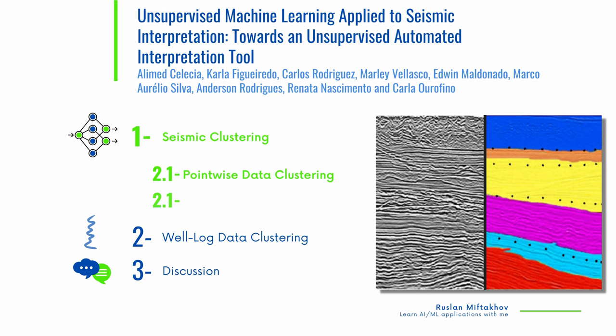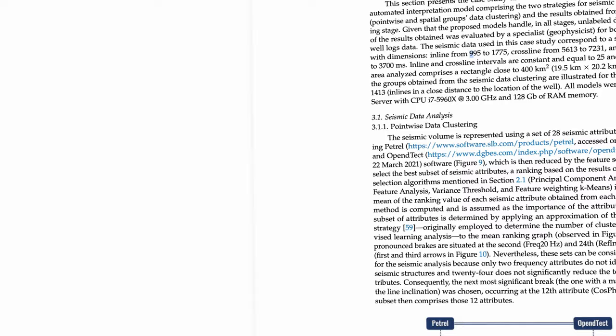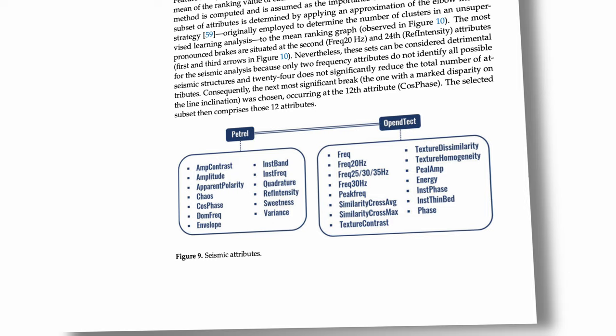The authors propose applying unsupervised clustering methods separately on seismic and well-log data. Starting with seismic clustering: point-wise data clustering methods analyze the seismic volume using each data point as a sample. These samples can be described with multiple seismic attributes commonly extracted from amplitude data, but each new seismic attribute usually requires gigabytes of memory, which adds up to a prohibitive size for most consumer-grade hardware.